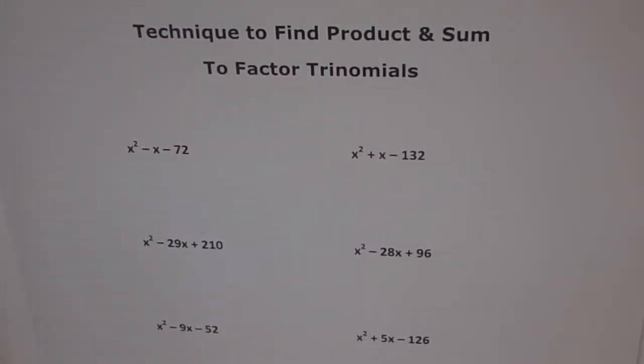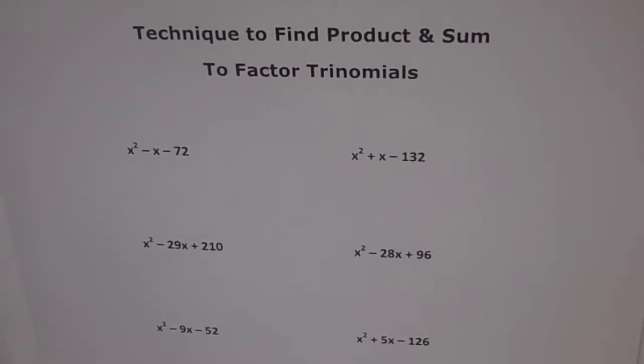Factoring trinomials. We discussed this topic in details where we said that if the leading coefficient is 1, then factoring trinomials is just finding product and sum of the constant term. So that the product is equal to the constant term and the sum is equal to the coefficient of the middle term. Now, that's a very simple way of doing it, but I found that students are having difficulty in finding those magic numbers which will give product as the constant and sum as the coefficient of the middle term. So I thought it important to go through a technique which will help them do so.